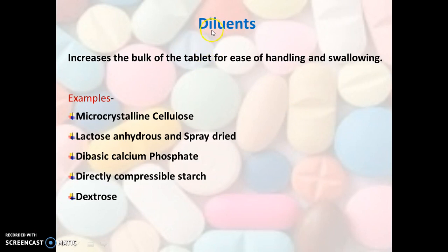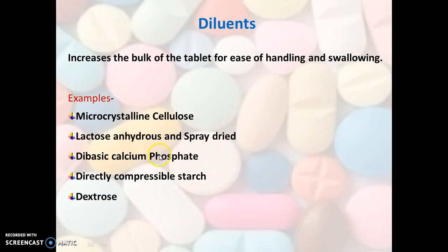The most widely used excipients are the diluents. Diluents are those excipients which increase the bulk of a tablet for ease of handling and filling when the quantity of drug is too small. Examples of diluents are microcrystalline cellulose, lactose anhydrous, spray-dried lactose, dibasic calcium phosphate, directly compressible starch, and dextrose.